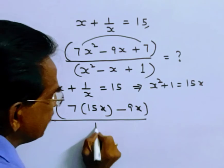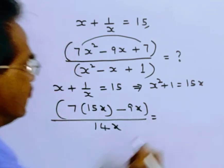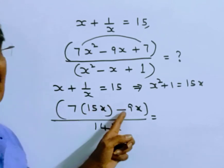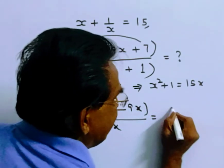15x minus x is equal to 14x. This is equal to 105x. 105 minus 9, that is equal to 96x.